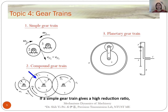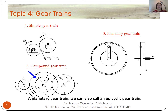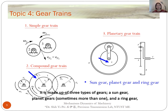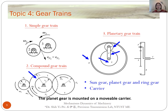If a simple gear train gives a high reduction ratio, the final gear may have a large diameter compared to the input gear. Planetary gear trains, also called epicyclic gear trains, provide high power density compared to standard parallel axis gear trains. A planetary gear train is made up of three types of gears: a sun gear, planet gears (sometimes more than one), and the ring gear. The sun gear and planet gears are external gears, while the ring gear is an internal gear. The planet gear is mounted on a planet carrier and orbits the sun gear while meshing with the ring gear.